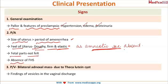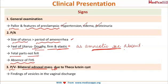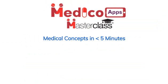If you try to feel for fetal parts, they are not felt, and there will be no fetal heart sound. On per vaginal examination, you will be able to feel bilateral adnexal masses, which are due to theca-lutein cysts. Sometimes the patient can expel vesicles in the vaginal discharge, so you can even find that on examination.